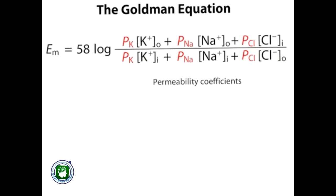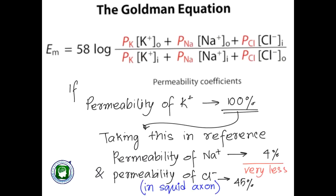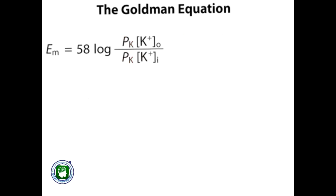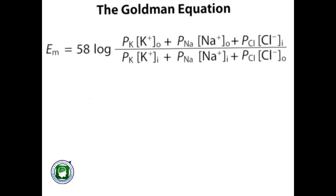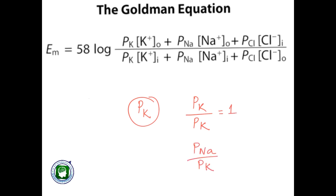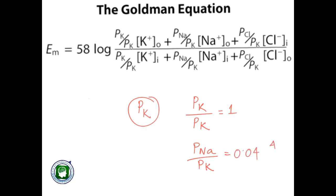Let's solve this equation taking permeability coefficients into consideration. If potassium has a permeability of 100%, then sodium would have a permeability of just 4% and chloride ions a permeability of around 45%. If we consider that the membrane is impermeable to sodium and chloride — that is, permeability is 0% — the equation shortens into the Nernst equation for potassium. Taking all ions into account and dividing numerator and denominator by the permeability constant of potassium, it becomes 1 for potassium and 0.04 for sodium.